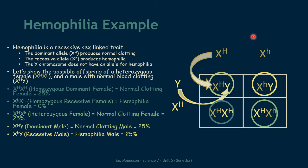Remember what I said about sex-linked disorders — males are much more likely to show the disorder than females. Looking at our Punnett square: the father does not have hemophilia, the mother does not have hemophilia, none of the daughters have hemophilia, but half of the sons would have hemophilia. The Punnett squares always back this up — no matter how you do it, males are always more likely to get these sex-linked disorders than females because they only have one allele, whereas females have two.